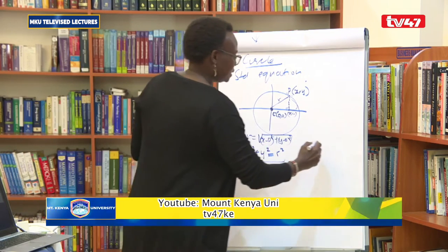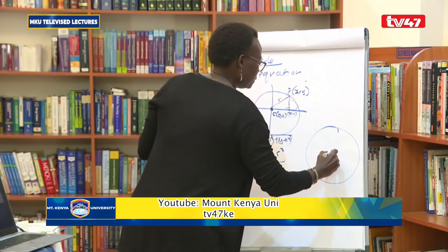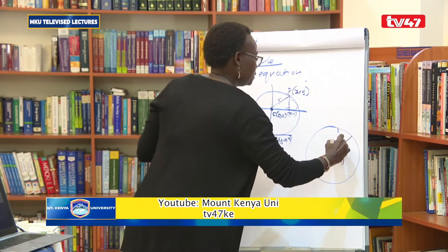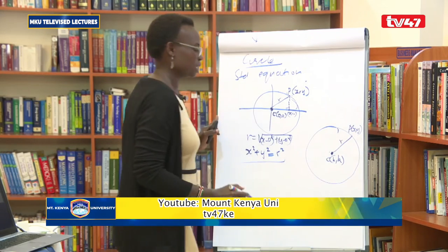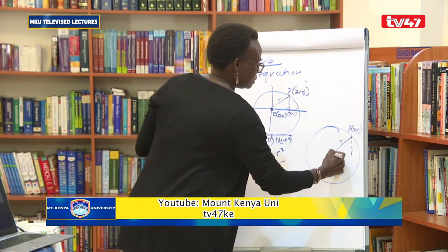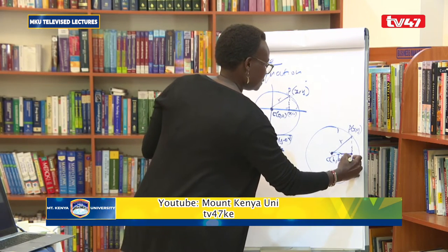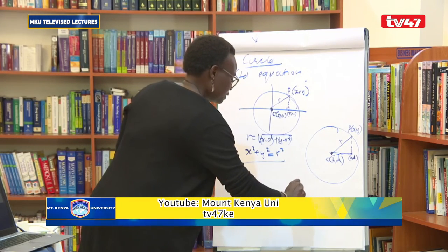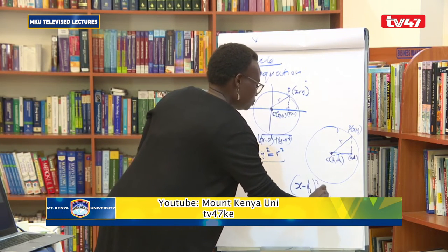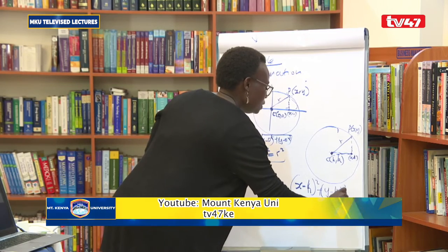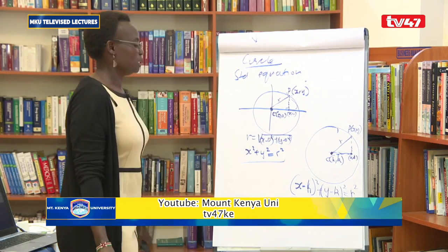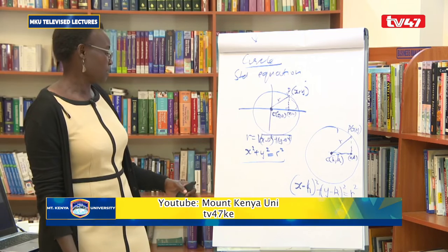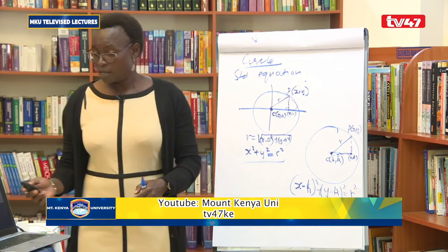If the circle has its center not at the origin but at (h, k), with a point P at (x, y) on the circumference, applying the same argument gives (x minus h) squared + (y minus k) squared = r squared. This is the standard equation of a circle centered at (h, k).